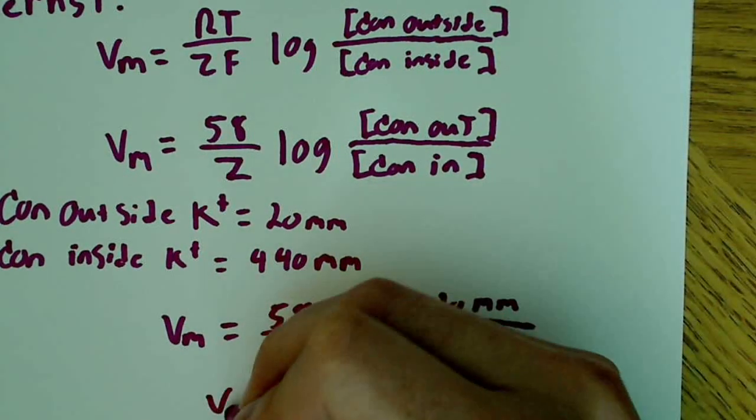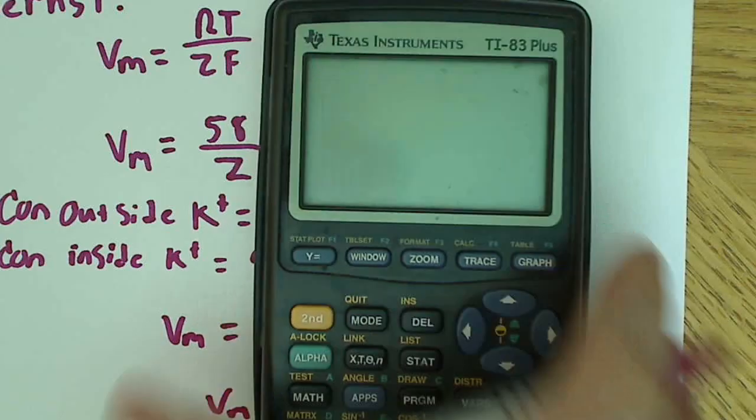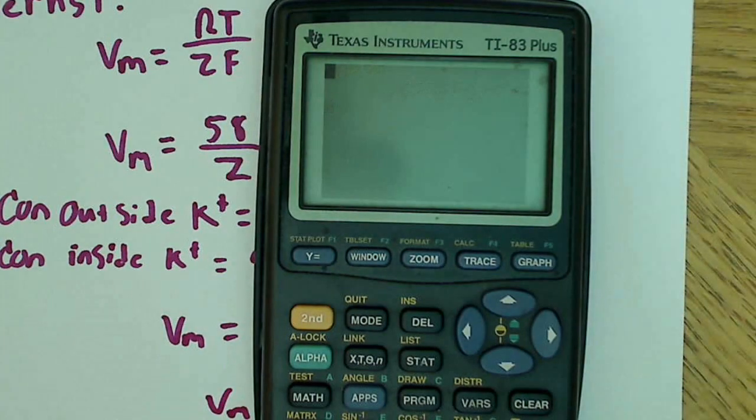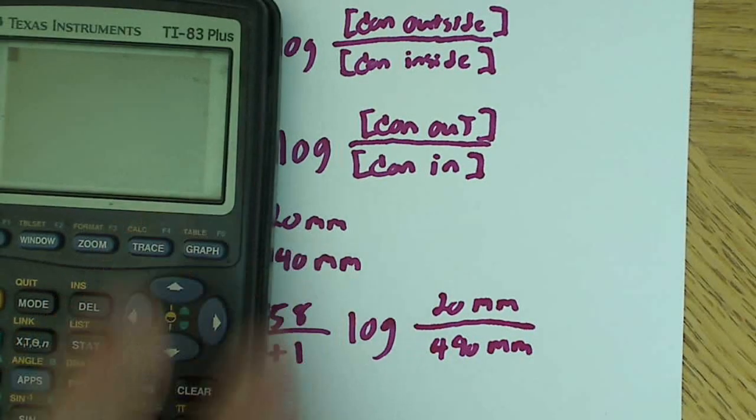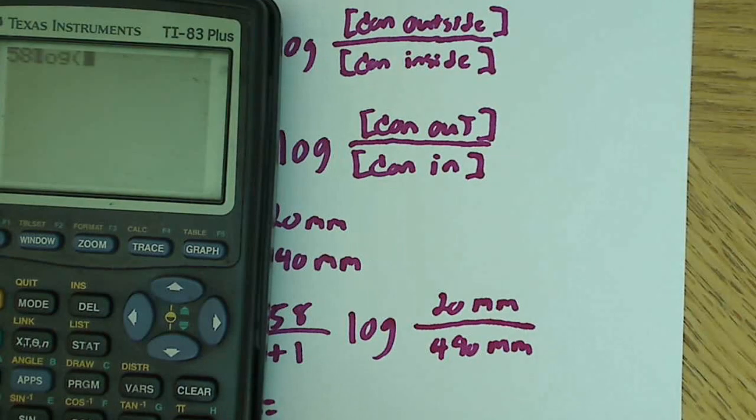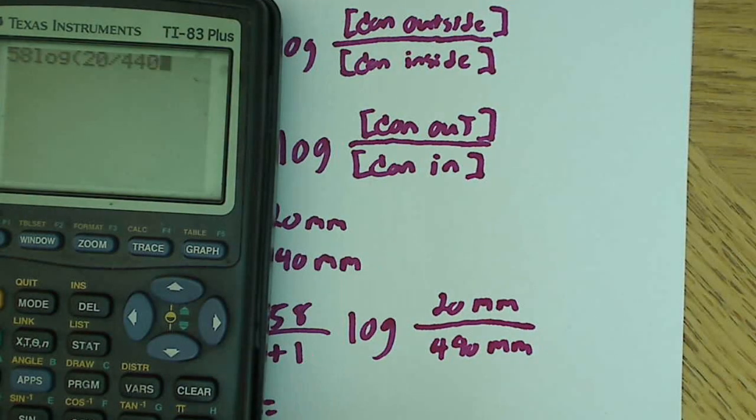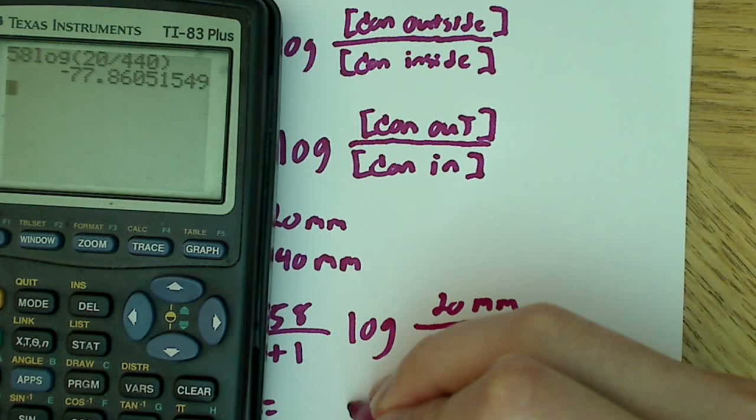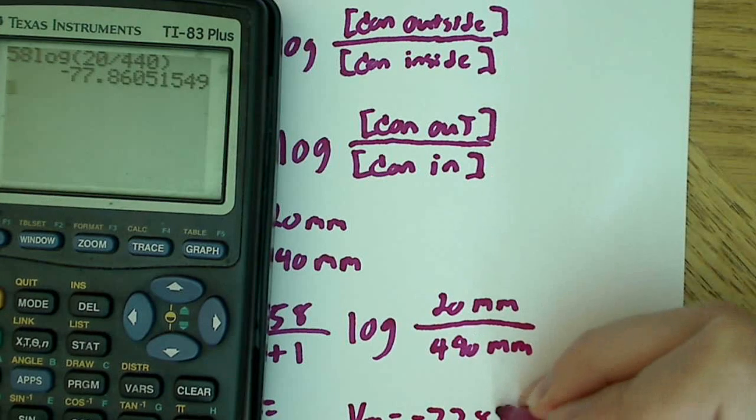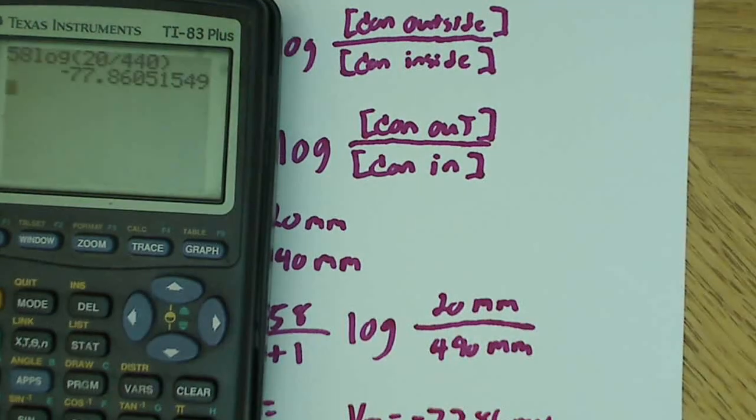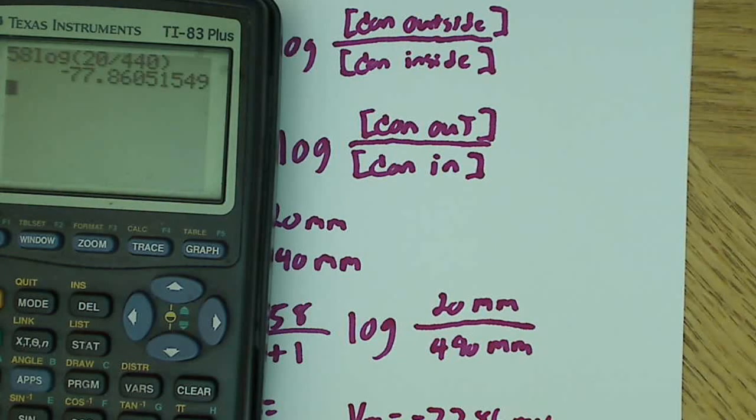Now, all I'm going to do is plug all that into a calculator, basically. In most cases, you're going to be allowed to use a calculator. Just for the sake of this particular question, let's just run it through the calculator. So 58 times the log of 20 over 440, and that's about negative 77.86 millivolts. So VM is equal to negative 77.86 millivolts.